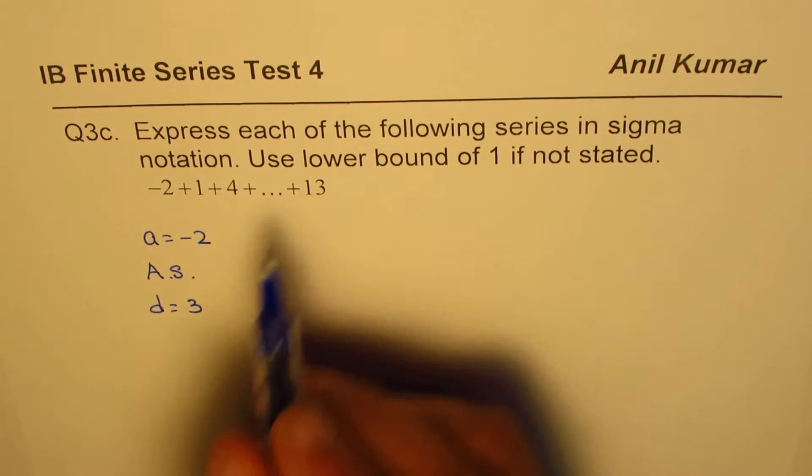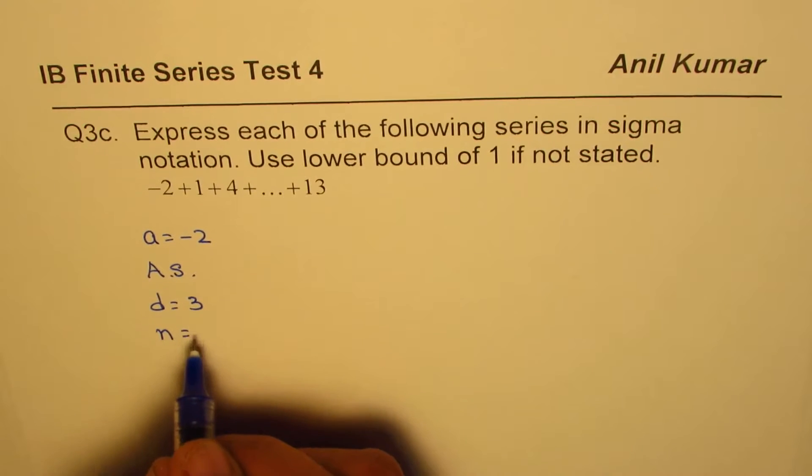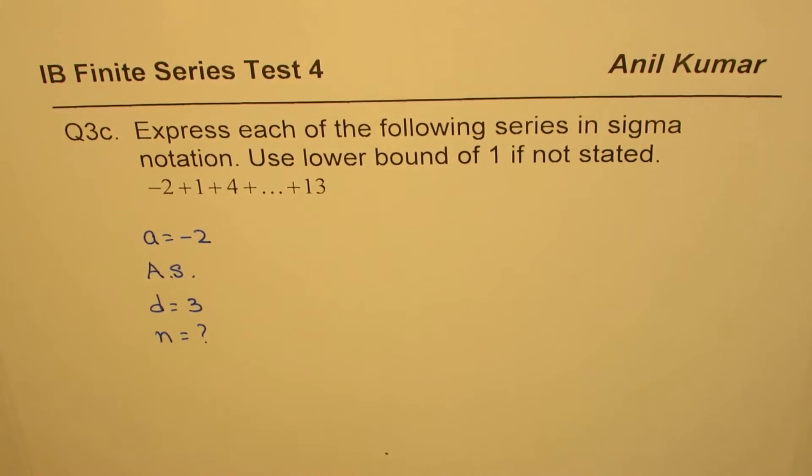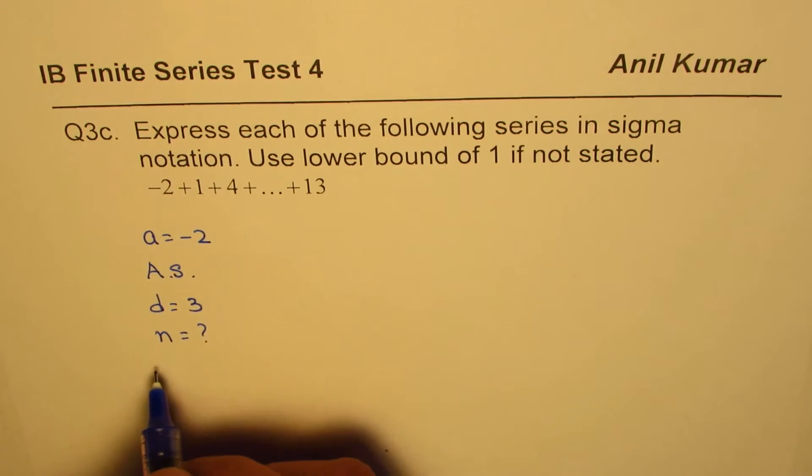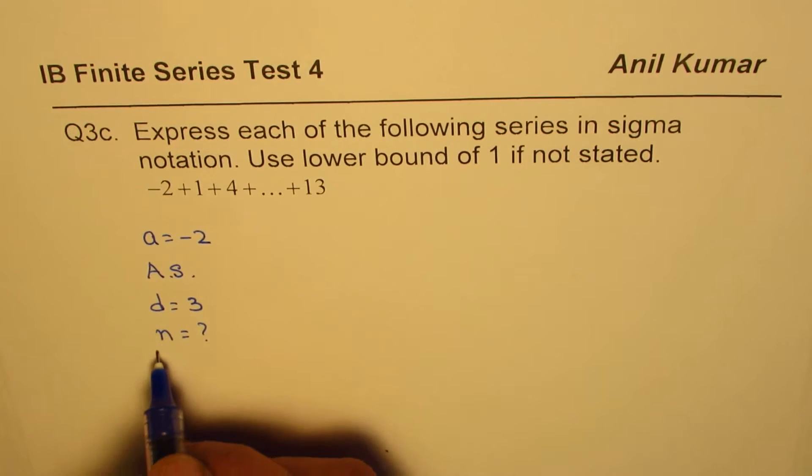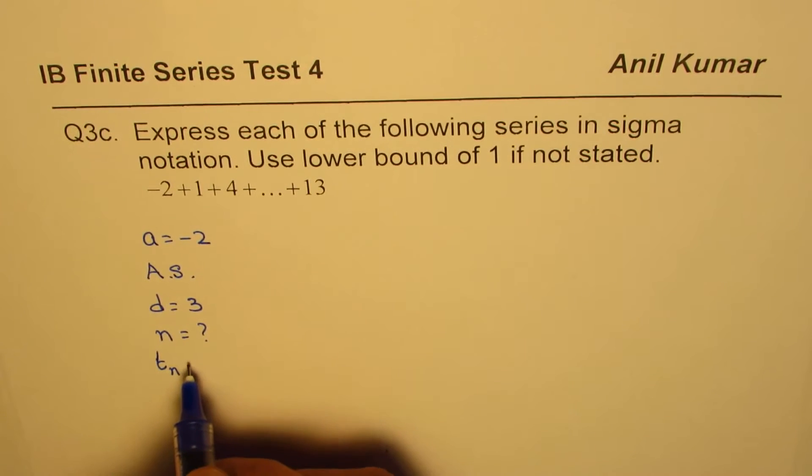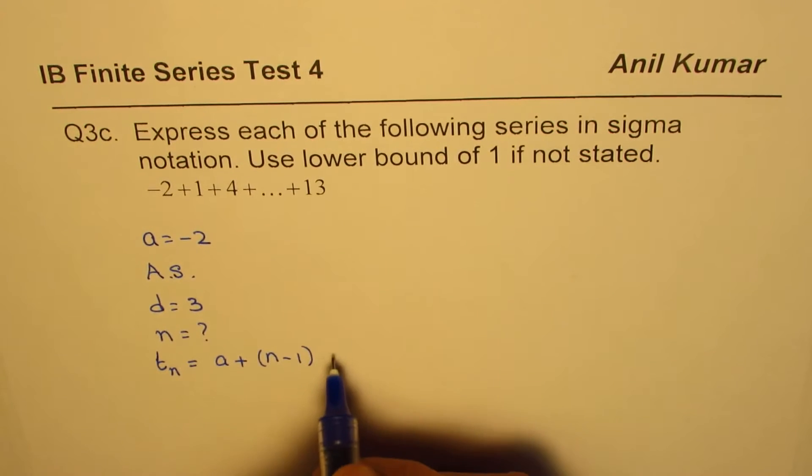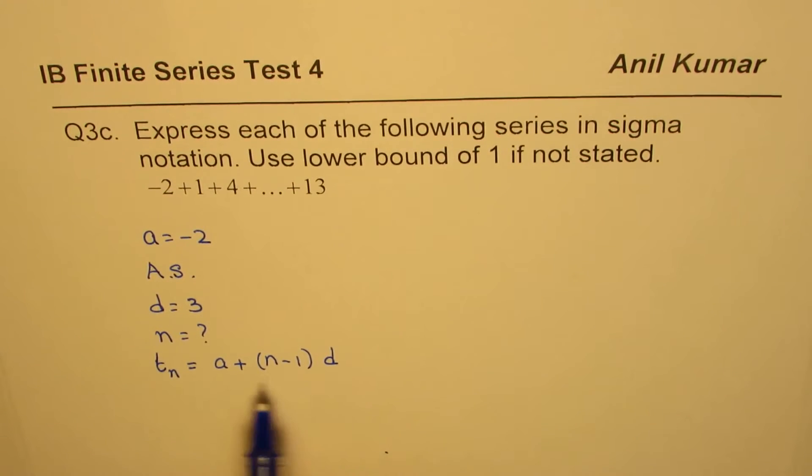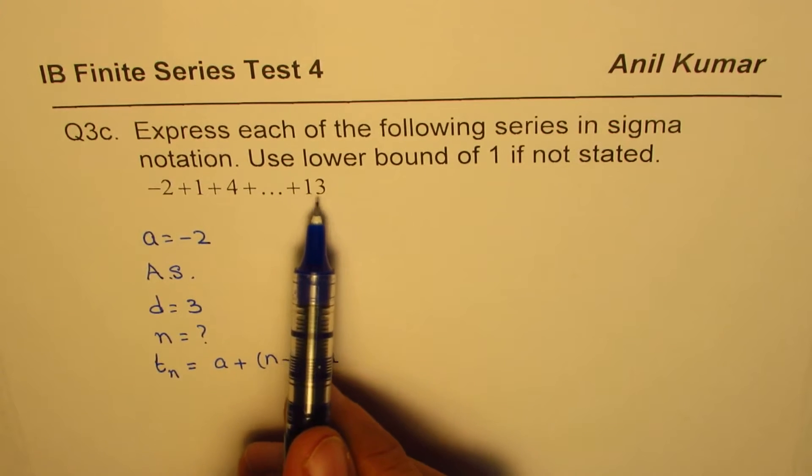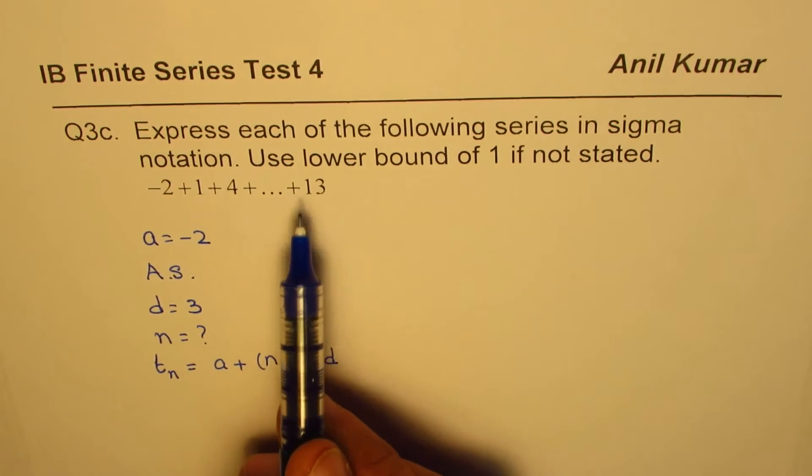What we don't get here is the number of terms n. We can always find the value of n by using the standard formula for arithmetic sequence, which is: nth term should be equal to a + (n-1) times d.